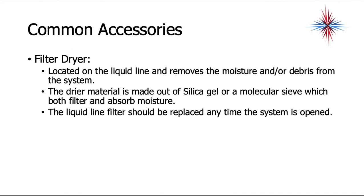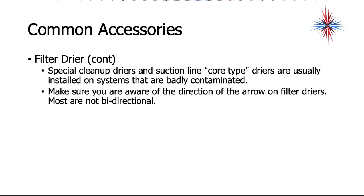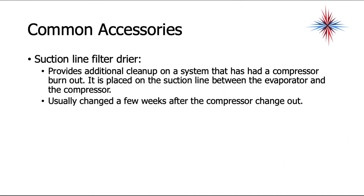Filter dryers are located on the liquid line and remove moisture and debris using a silica gel or molecular sieve. A liquid line filter dryer should be replaced any time a system is opened. They are directional — unless it is a heat pump filter dryer, it is not bi-directional. If there is a temperature difference or frost across a filter dryer, it is clogged. Suction line filters provide additional cleanup after a compressor burnout, placed between the evaporator and compressor, and are typically changed a few weeks after compressor replacement.